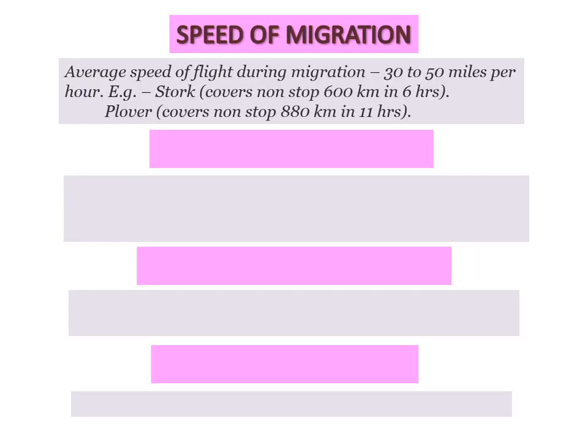Speed of migration: the average speed of flight during migration is 30 to 50 miles per hour. For example, storks cover a non-stop 600 km in 6 hours, whereas plovers cover a non-stop 880 km in 11 hours.